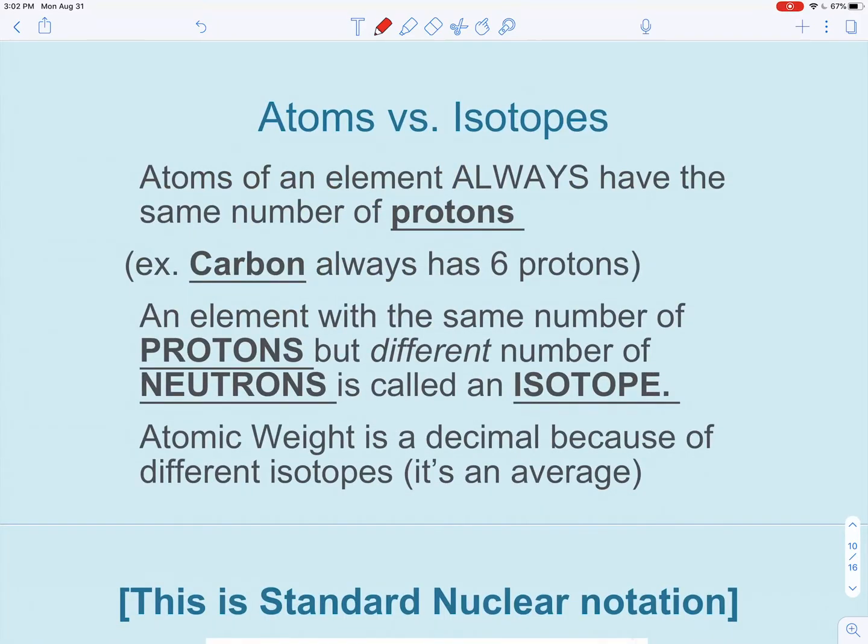Next we'll talk about isotopes. Ions have different number of electrons. Isotopes will have a different number of neutrons. Atoms of an element always have the same number of protons. For example, carbon will always have six protons. Something like helium will always have two protons. The atomic weight is an average of all the different isotopes, and that's why we get a decimal number.